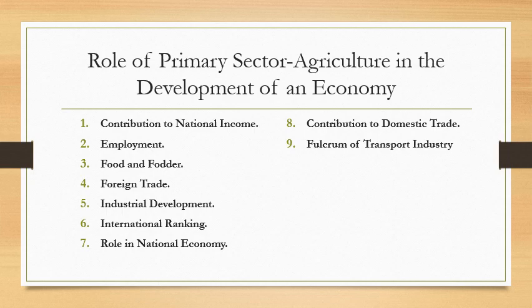2. Employment. Agriculture provides employment and work to an overwhelming majority of the Indian masses. According to recent economic surveys, nearly 50% of the Indian population is still engaged in agricultural activities. Besides, a large number of people earn their living by working in occupations dependent on agriculture, like storage, processing, trade, and transport of agricultural products.